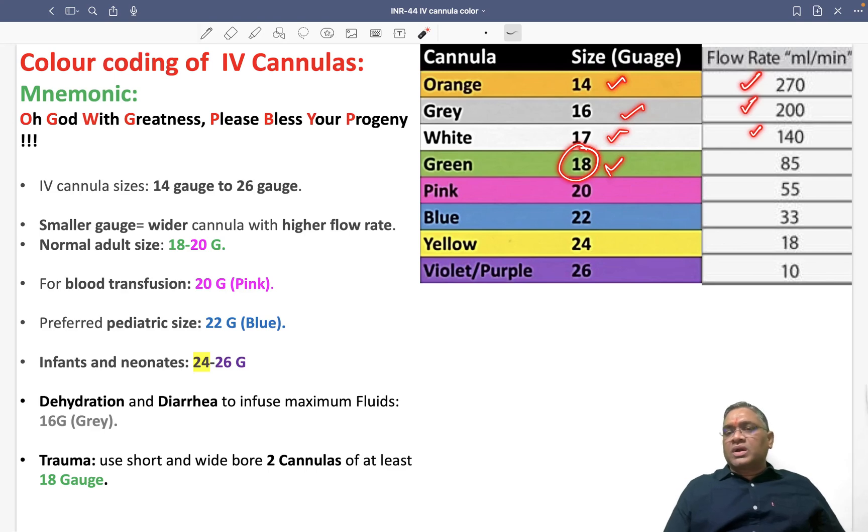Examiners will ask: when using green for trauma, what's the flow rate? 85 ml per minute. When using 16g for dehydration, what's the flow rate? 200 ml per minute. When using 20g at the blood bank, the flow rate is 55 ml per minute.